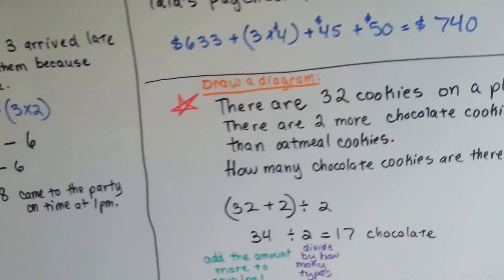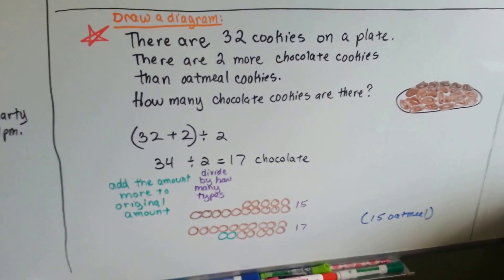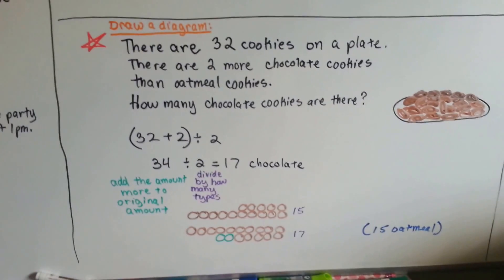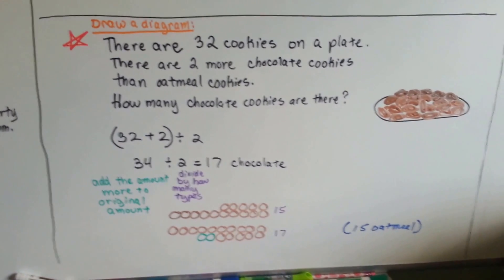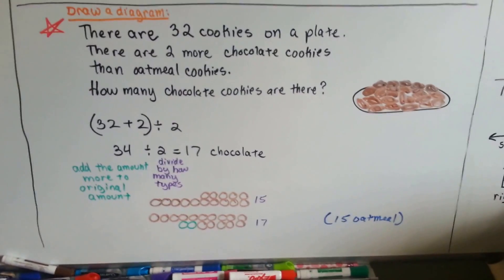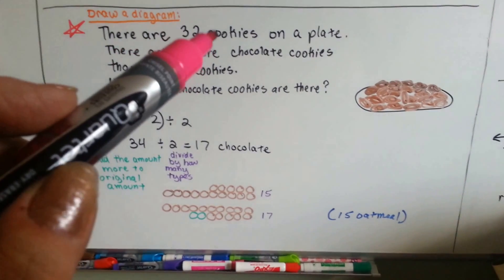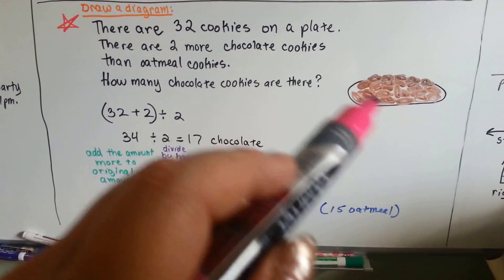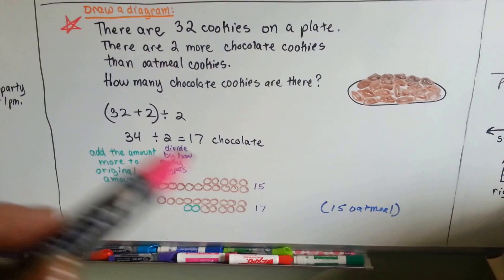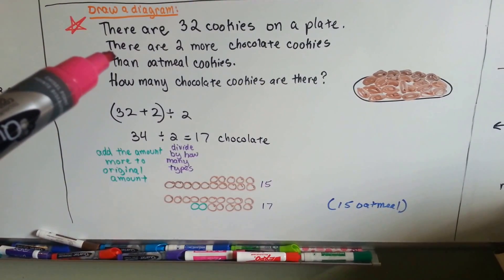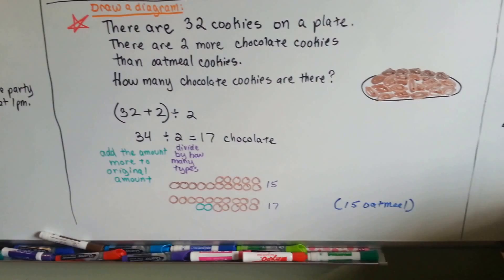Now, this one is a little bit stranger, and I even put draw a diagram because I thought that would help. This is not necessarily working backwards. I noticed this in the book, and I thought I'd better do this to help you out. There are 32 cookies on a plate, okay? And I just drew cookies, so I don't even know if there's 32 there. There are two more chocolate cookies than oatmeal cookies. So how many chocolate cookies are there?